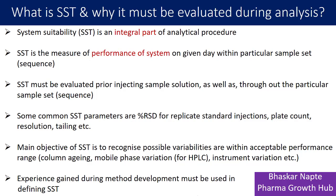Now, how to set system suitability? You can refer to USP General Chapter 621 on chromatography for understanding the limits for tailing or percent RSD in case of an assay. But you must not ignore the knowledge gained during method development. If you developed the method in-house, understand the critical quality attributes of your procedure and what parameters need to be captured as part of your system suitability. For example, if a degradant peak is closely eluting near the analyte or API drug substance peak, it is a good idea to prepare a resolution solution consisting of the degradant and API, and then set the acceptance criteria for resolution.